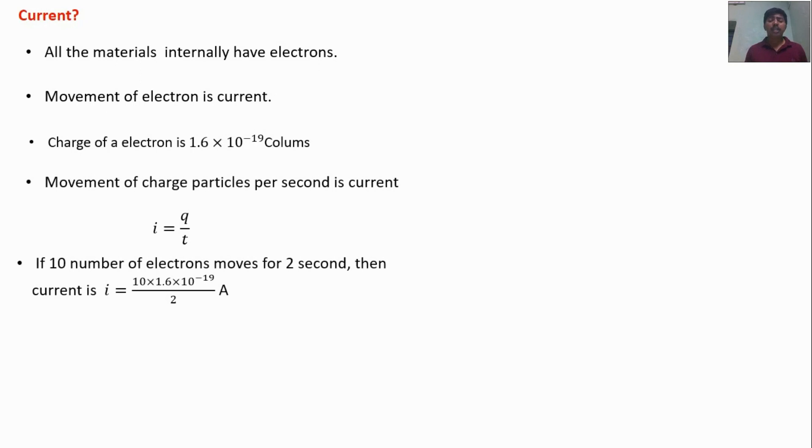For example, if 10 number of electrons moves for 2 seconds, then what will be the current value? Current I is equal to Q. Here number of electrons is 10. Charge for each electron is 1.6 into 10 power minus 19. So total charge is 10 into 1.6 into 10 power minus 19 times 2 seconds. T is equal to 2 seconds. That much of current will flow.